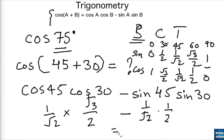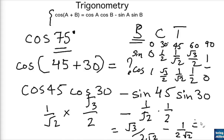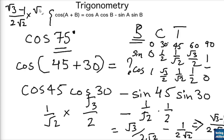Substituting into the formula: cos 45 · cos 30 minus sin 45 · sin 30 gives (1/√2)(√3/2) minus (1/√2)(1/2), which simplifies to √3/(2√2) minus 1/(2√2), giving us (√3 minus 1) upon 2√2.